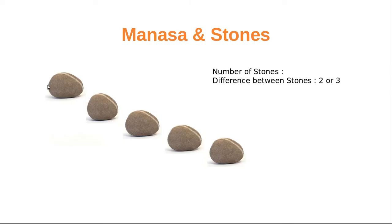You can consider this as a trail of stones where the difference between the stones is either two or three, as specified in the problem statement. We need to find out what the possible values are at each stone. There will be multiple possible values since the difference can be either of two values.